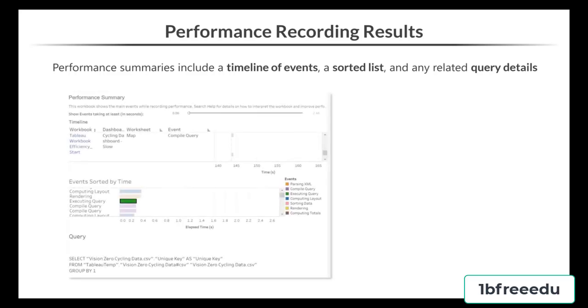Performance summaries include a timeline of events, a sorted list, and related query details around your workbook. After a performance recording is stopped, the recording workbook will automatically appear — Tableau Desktop is required, not Tableau Public. The first visualization is your timeline, which shows events in the order they happen and their duration. Use this to find which dashboard or worksheet combinations are driving the worst performance.